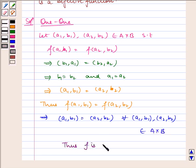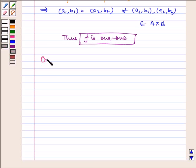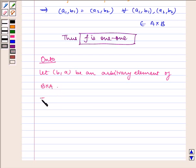Thus, f is one-to-one. Now let us check for onto. Let (b,a) be an arbitrary element of B×A. Then b ∈ B and a ∈ A, which implies (a,b) ∈ A×B.